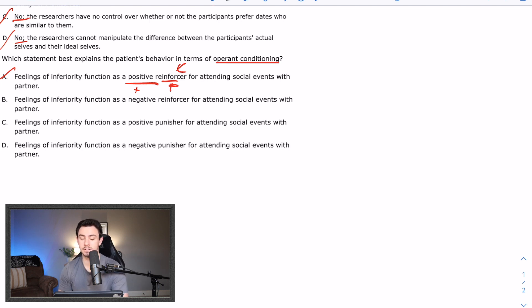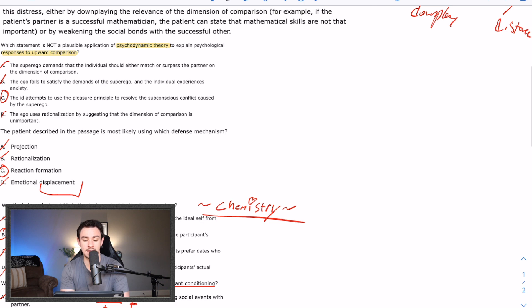B says, feelings of inferiority function as a negative reinforcer for attending social events. So if you're not super familiar with the lingo that is used in operant conditioning, you might pick this one because it feels like you would want something that would say negative because you think negative means bad. That's not what it means in this context. Negative just means the removal of the stimulus. Like grounding a kid, you remove their phone. That would be a negative. Negative punisher, probably, in that sense. Because you remove the stimulus. And so, we're not removing any stimulus when we're taking them to a party. So already, you can roll out B. You can also roll out D for that reason. And you get to C, which says, feelings of inferiority function as a positive punisher for attending social events with a partner. So is it positive? Are you adding a stimulus? Yep. Is it a punisher? Meaning, does it decrease their behavior? Does it make them want to come to less parties? Yep. So correct answer here is answer choice C.